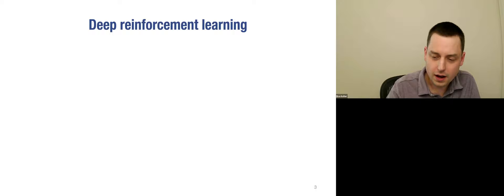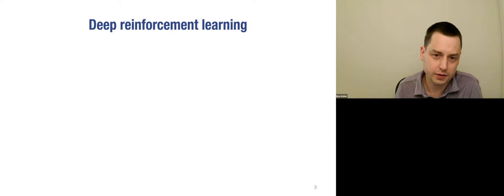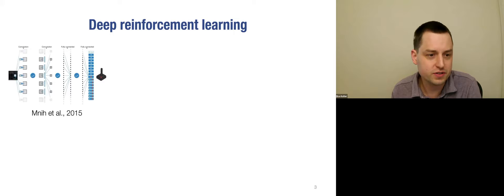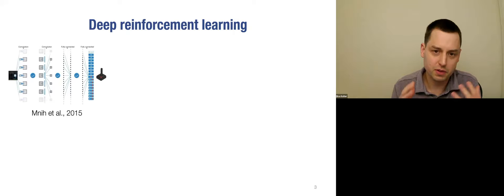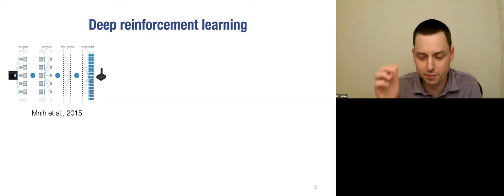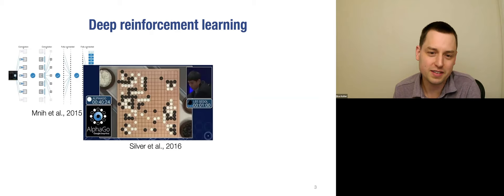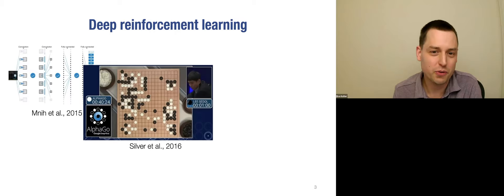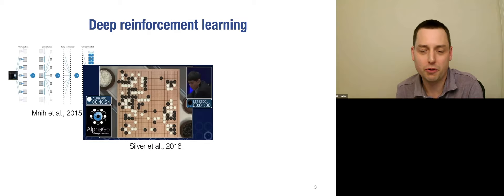Deep reinforcement learning — reinforcement learning augmented with modern machine learning techniques — has achieved some amazing things in recent years. Six years ago there was the famous paper on playing Atari games with deep RL, looking at game pixels and figuring out how to move the joystick, achieving superhuman performance in most of them. And of course the most famous accomplishment was AlphaGo, where DeepMind beat the world champion in Go about 10 years before we expected it by natural progression.